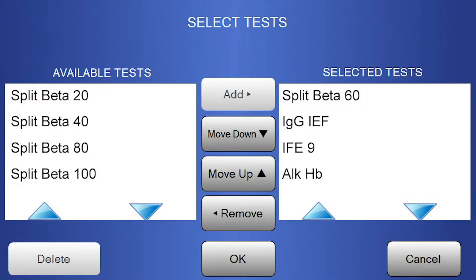The Spiffy Touch has a broad menu of assays available. Methods include serum protein and urine protein, both 5 and 6 band, in configurations of 10, 20, 40, 60, 80, and 100 samples per gel.